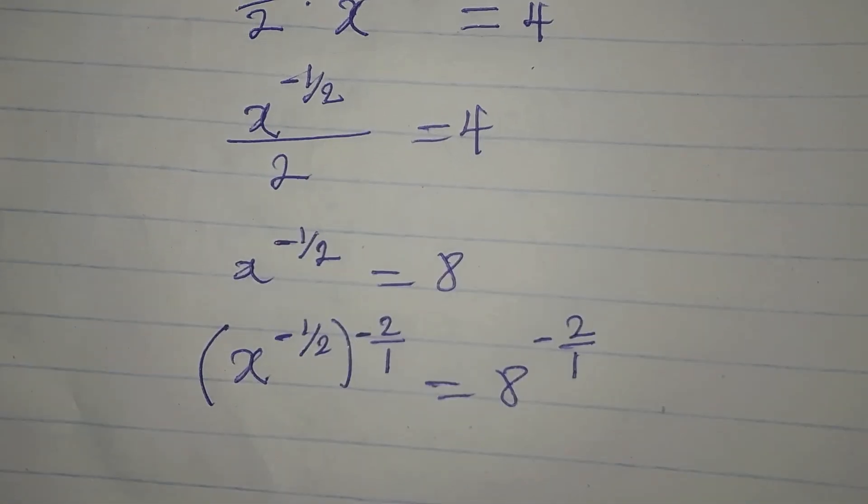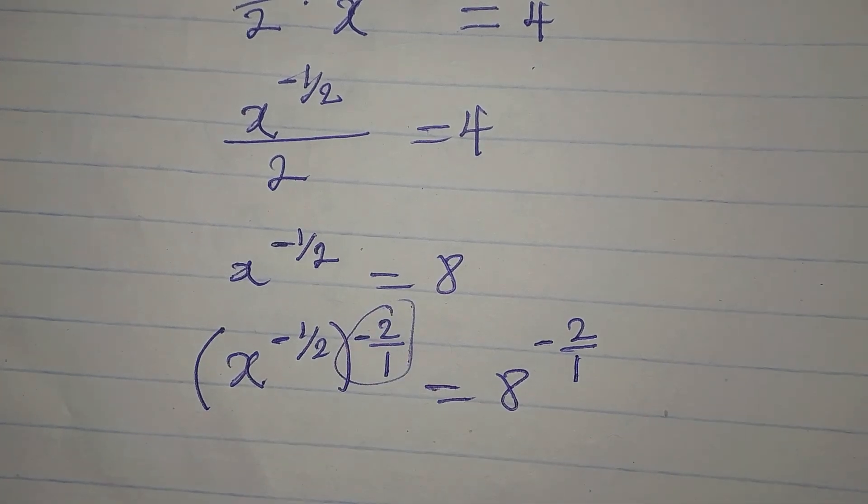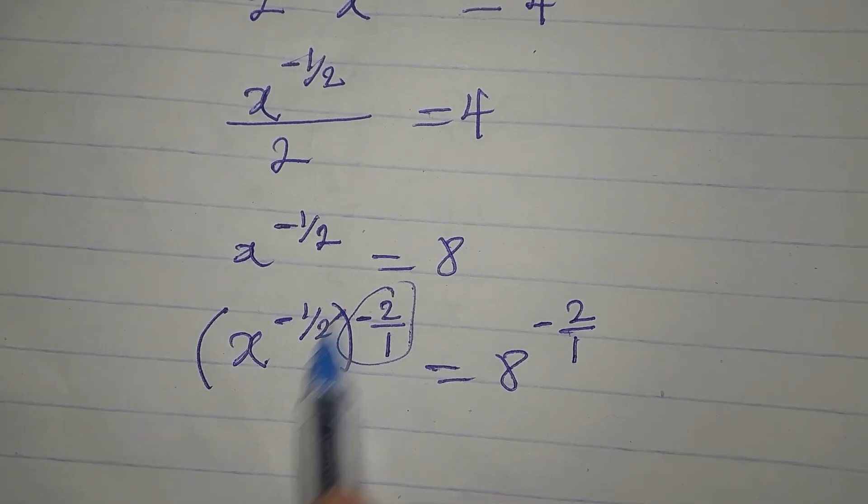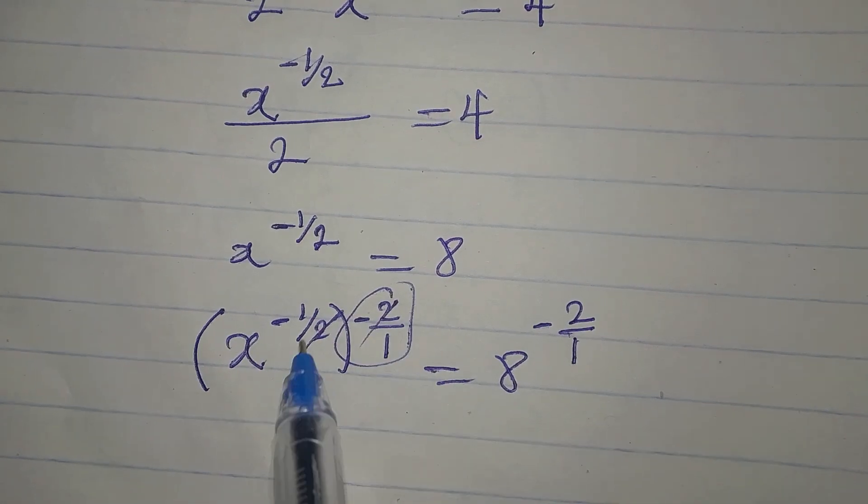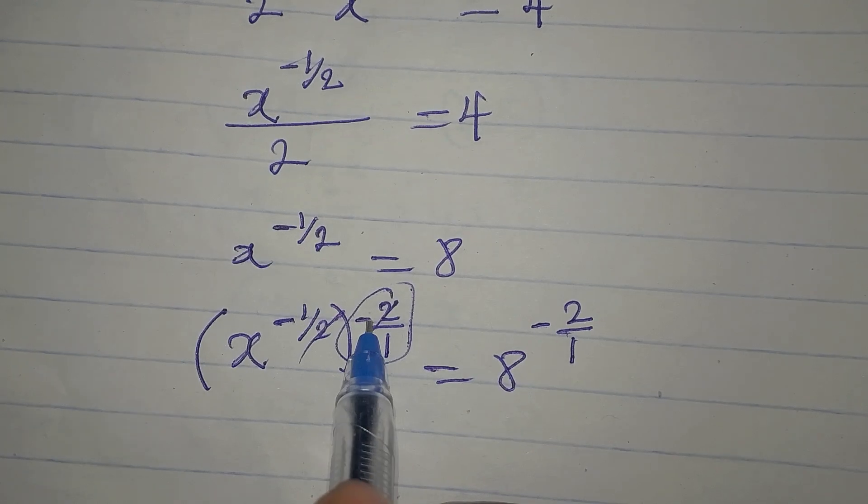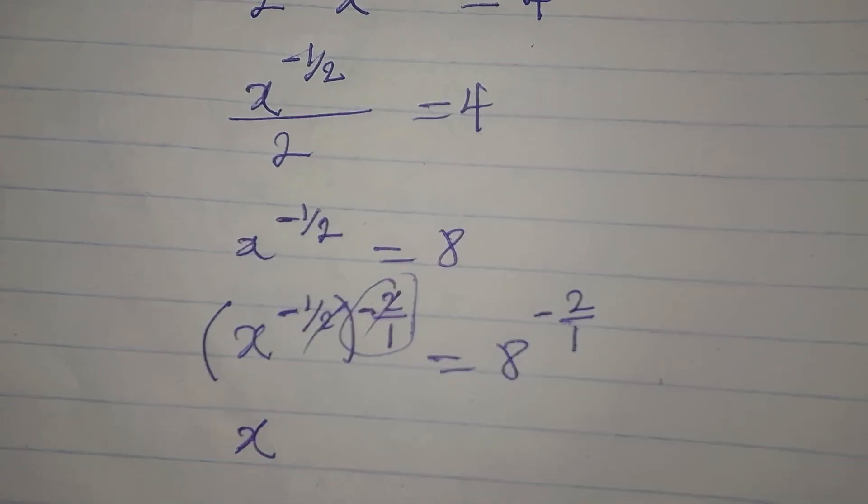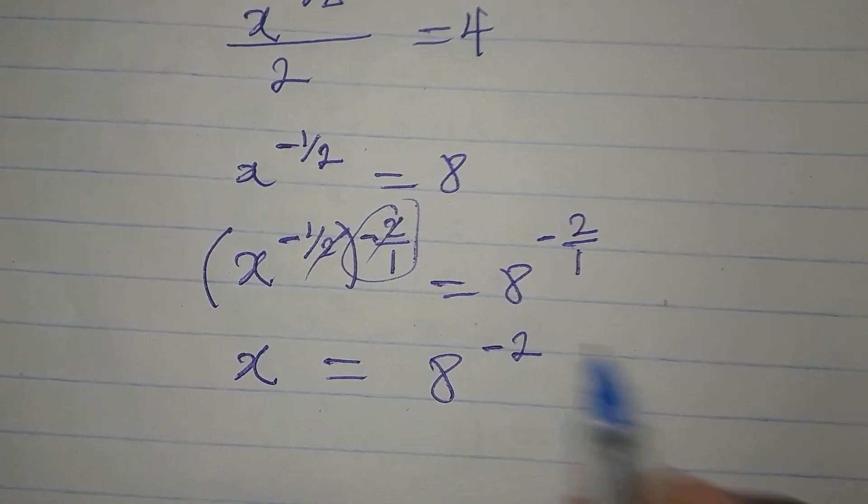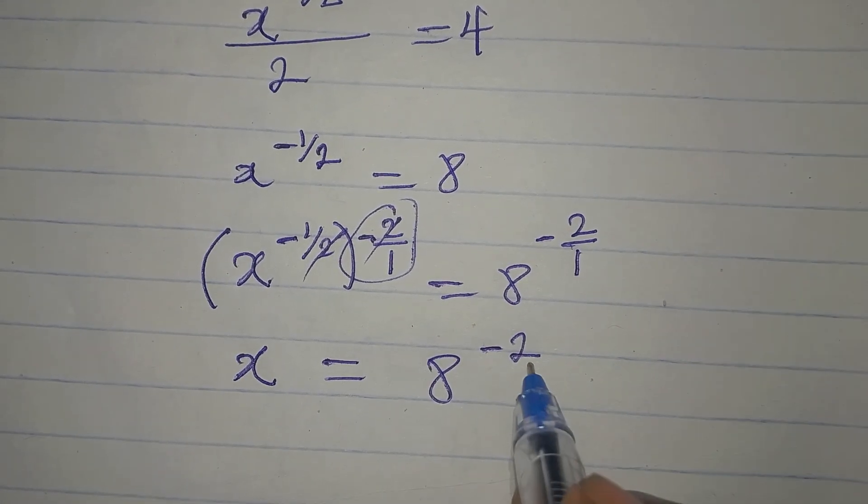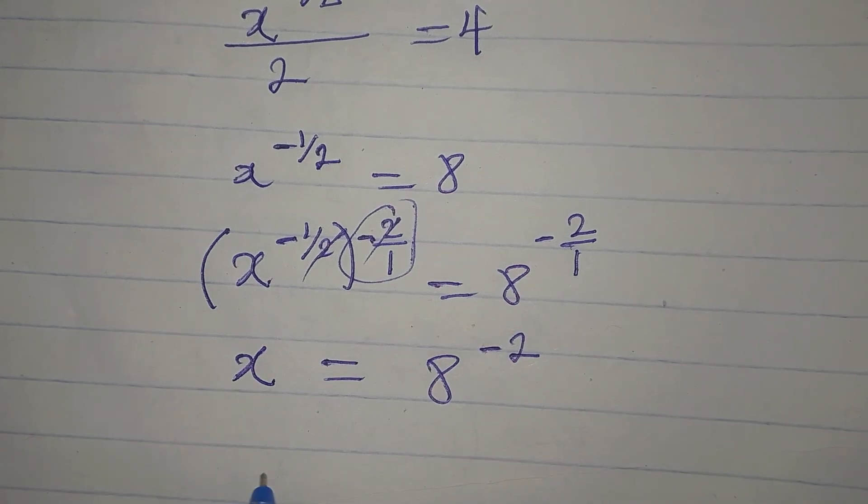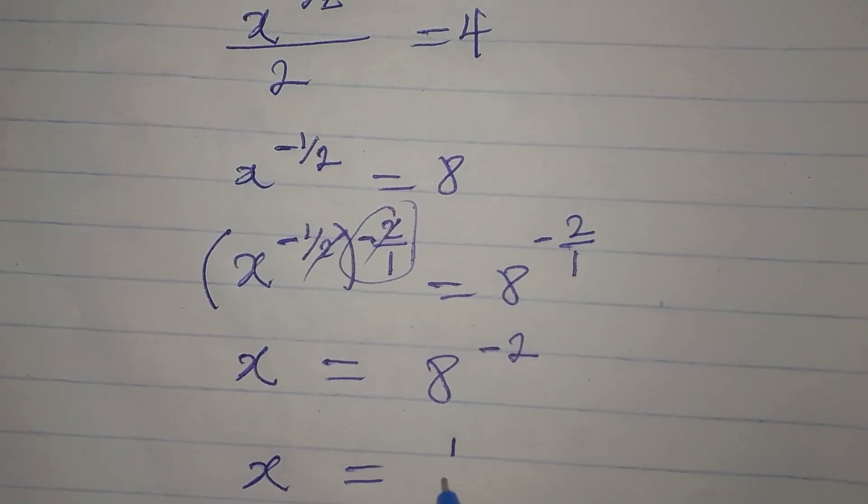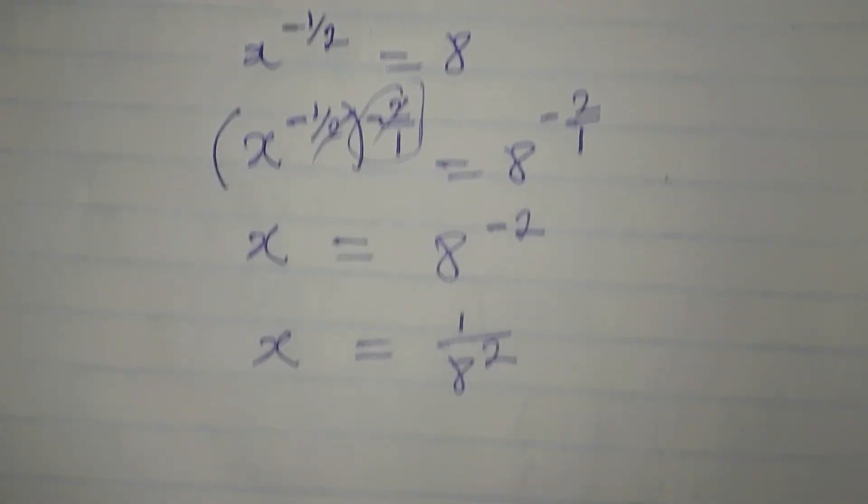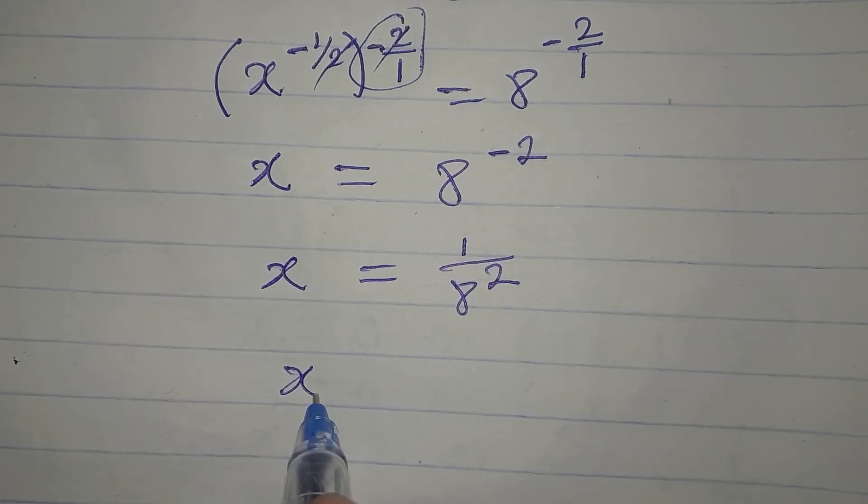Because what we introduce on the left must be introduced on the right. Now 2 will go there, then negative 1 times negative 1 will give positive, so x is alone here. It's equal to 8 to the power of negative 2, and now our x is equal to 1 over 8 to the power of 2. The negative is now gone, so our x will now be 1 over 64.